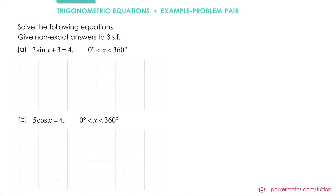In this example we've got a couple of basic trigonometric equations to solve. Starting off in part a, we have 2 sine x plus 3 equals 4, and we need to solve it in the region 0 is less than x is less than 360 degrees. To start with, I'm going to take the original equation and rearrange to isolate sine x, so I'm going to subtract 3.